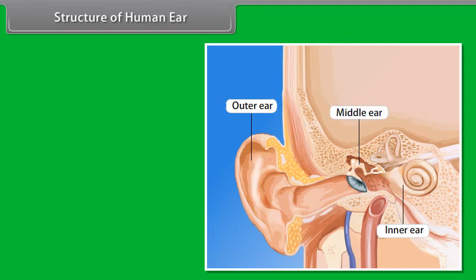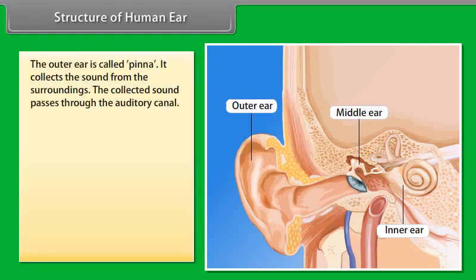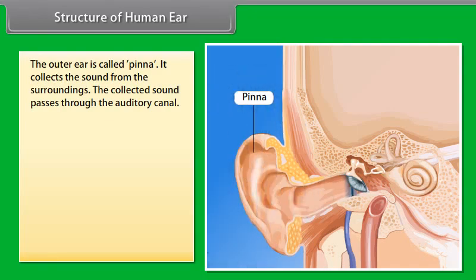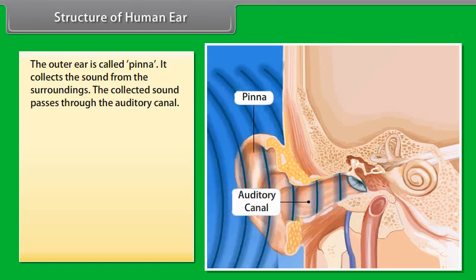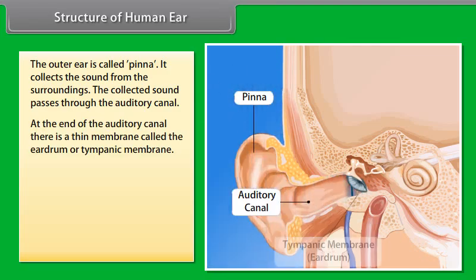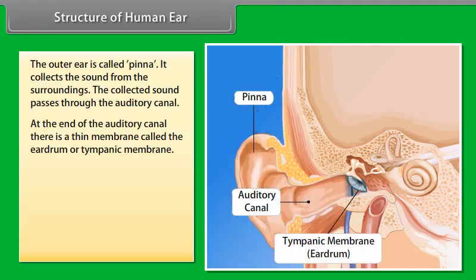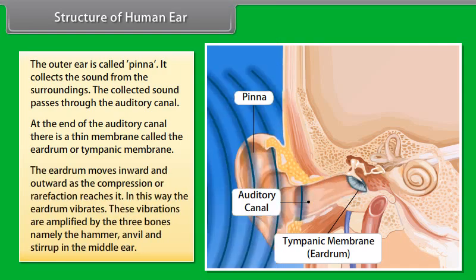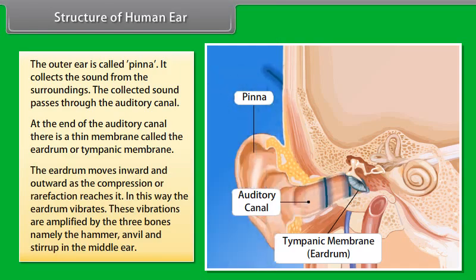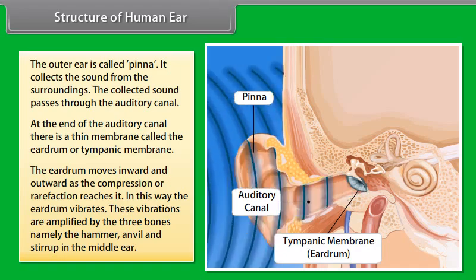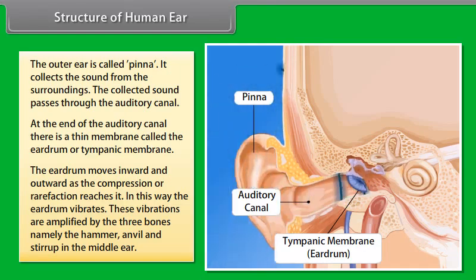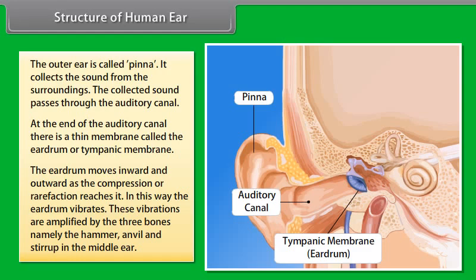The detector converts the ultrasonic waves into electrical signals which are appropriately interpreted. The distance of the object that reflected the sound wave can be calculated by using echo ranging method. Let the time interval between transmission and reception of ultrasound signal be T and the speed of sound through seawater be V. The total distance 2D travelled by the ultrasound is then 2D is equal to V into T. This is the echo ranging method.